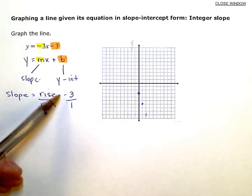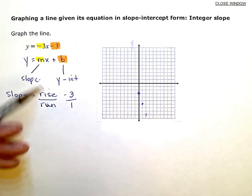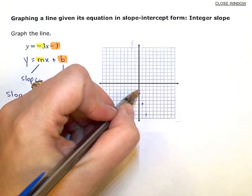And then if I want points over here, I just have to reverse it, both of these. Instead of down 3 over 1, I'm going to go up 3, back 1. You have to reverse it both ways. So up 3, back 1. Up 3, back 1.